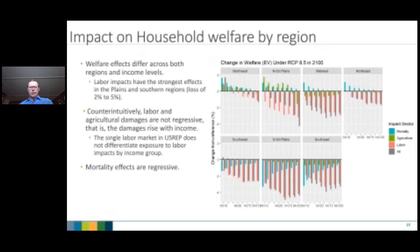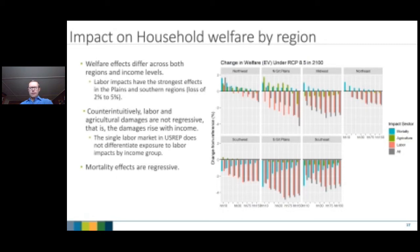A potential development would be to break out the labor market into different skill and occupational groups and tie that back to income groups. Mortality effects are regressive — not surprising, since we apply the same shock to all income groups without differentiating by age, which would be another extension.